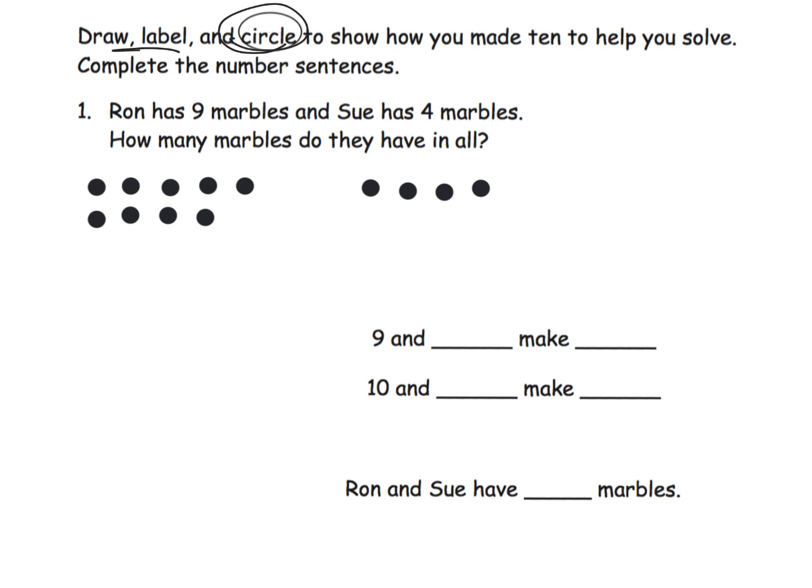It says circle, so draw and label. Let's label these are Ron and these are Sue. Now it says circle. We're gonna circle to show how we made 10. Well, we have nine, so all we need is one of these to make 10, so I'm gonna circle. Again, parents and teachers, it's very unlikely your first graders put their dots all nice and neat like I did, and that's perfectly fine at this point.